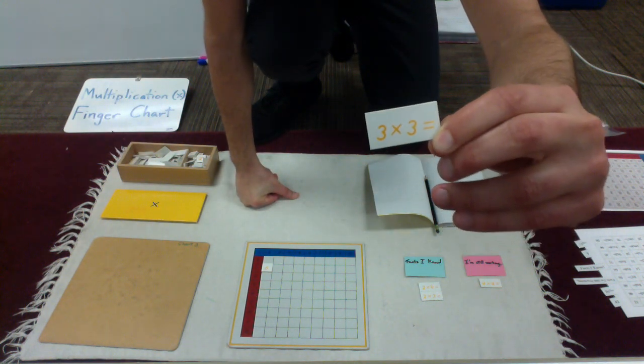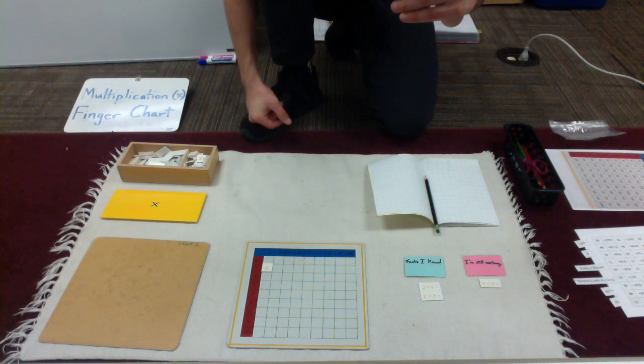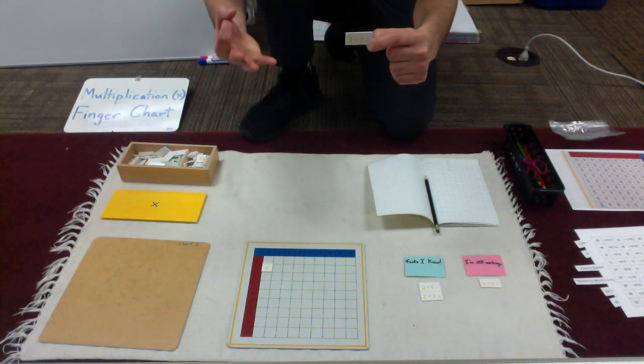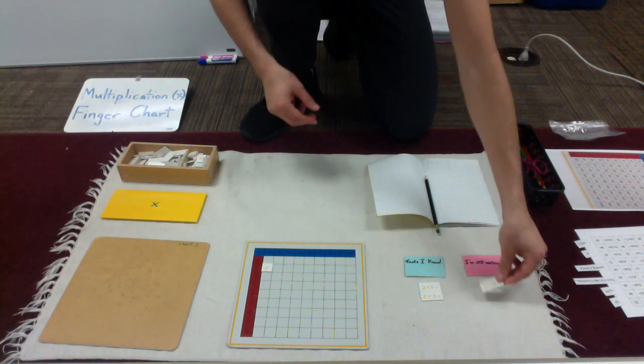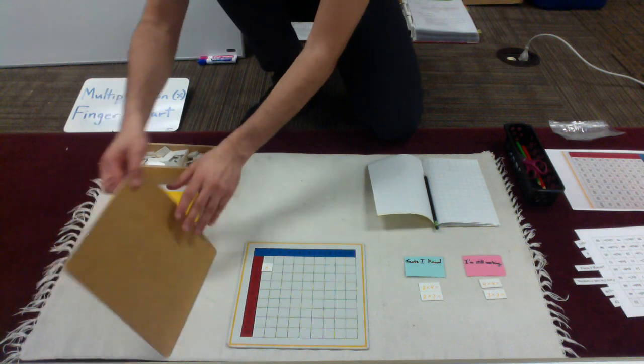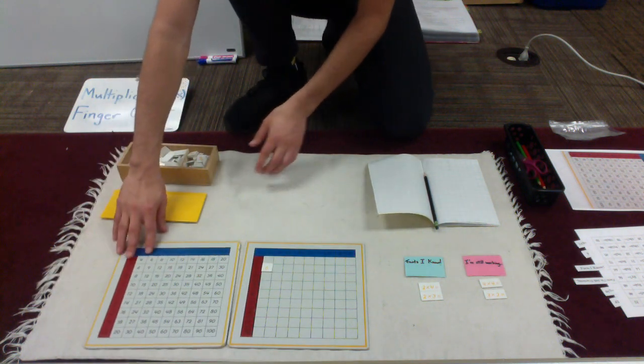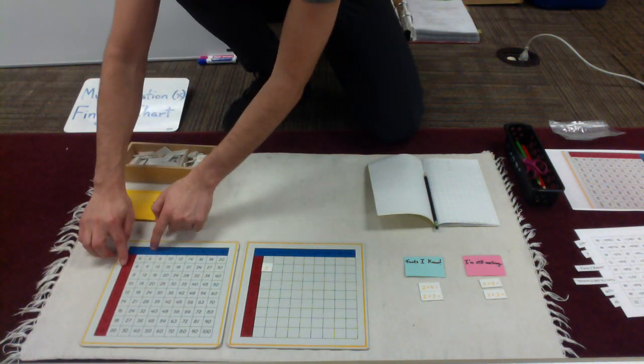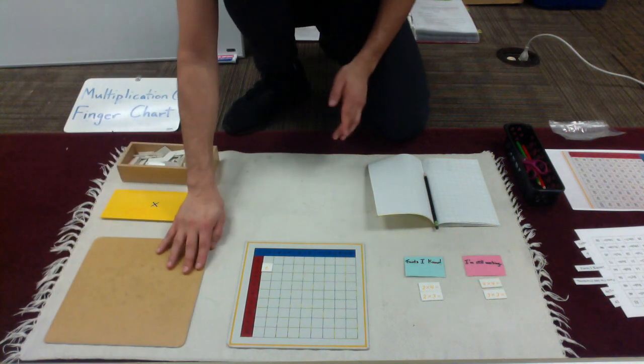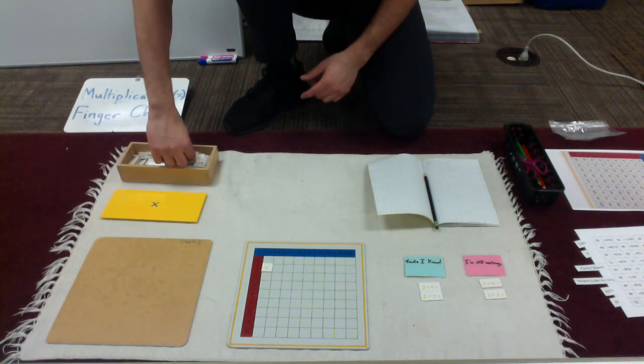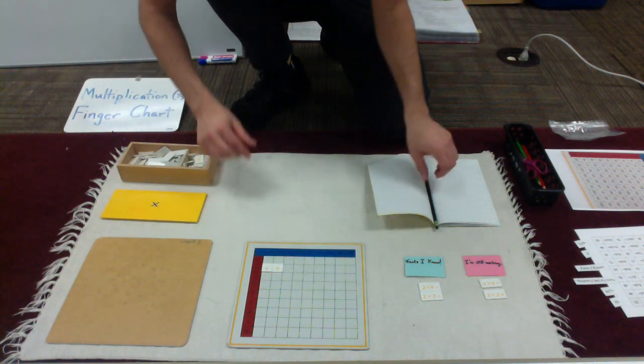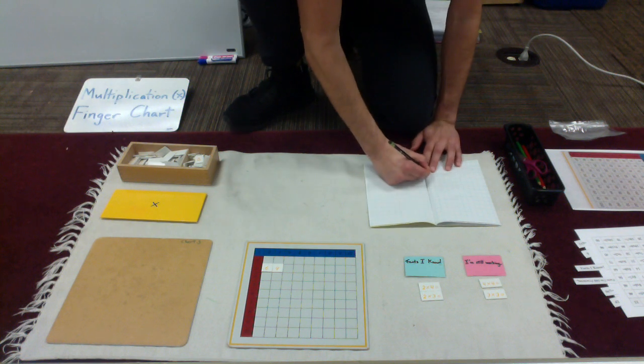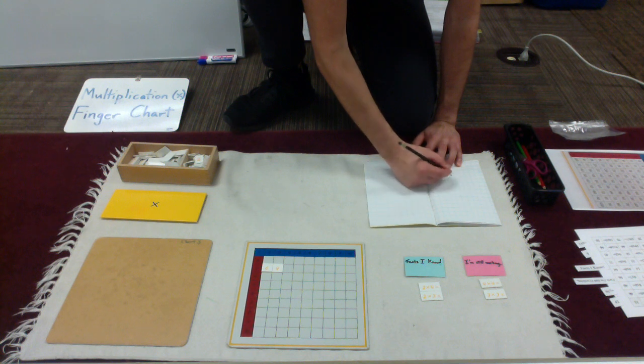3 times 3 equals. I know multiplication is repeated addition, so 3, 6, 9. I can practice my skip counting. I think 3 times 3 is 9. But let me go back to my chart just to double check. 3 times 3, in fact, is 9. So I'll find my product and then place it on my mute chart here. And now I'll record. 3 times 3 equals 9.